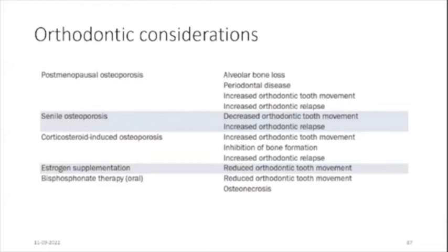In senile osteoporosis, there can be decreased orthodontic tooth movement and increased orthodontic relapse. In corticosteroid-induced osteoporosis, there can be increased orthodontic tooth movement, inhibition of bone formation, and increased orthodontic relapse. Estrogen supplementation can lead to reduced orthodontic tooth movement, and bisphosphonate therapy orally can reduce orthodontic tooth movement and cause osteonecrosis.